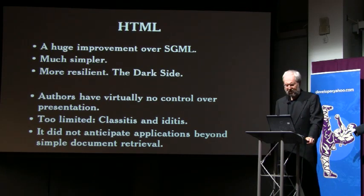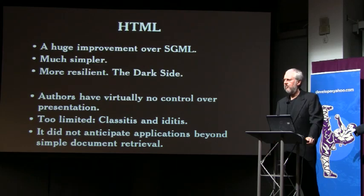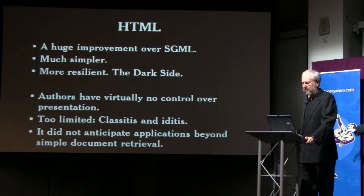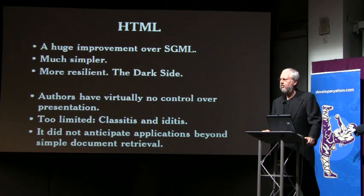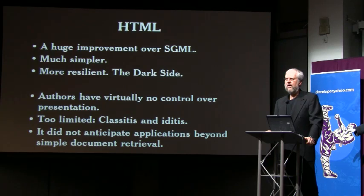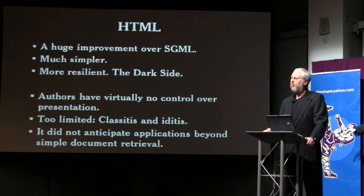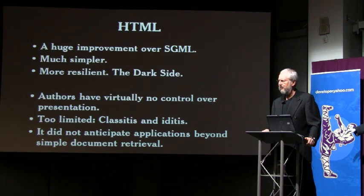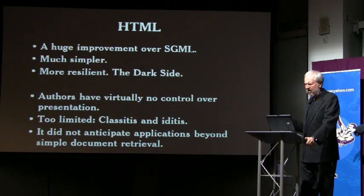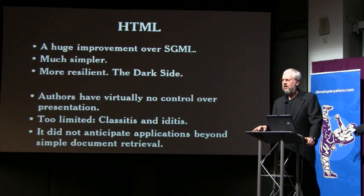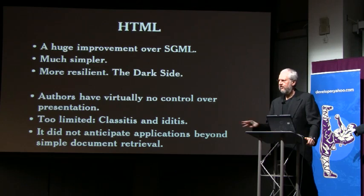One of the fundamentals of the original design of HTML was that the author has virtually no control over the presentation of the document. It turned out that having that control was important — sometimes we want pixel perfection. HTML by design did not permit that, so that had to get added later. There's also a problem in that the set of tags is much too small for the set of things we're doing. We end up having to do a lot of overloading — identifying something as an unordered list even if it isn't — and we end up having way too many classes or IDs. And it did not anticipate applications beyond simple document retrieval.